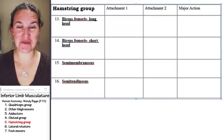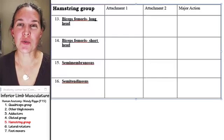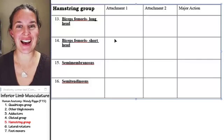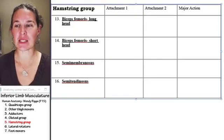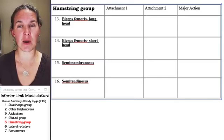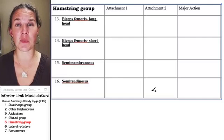All right. Hamstring group. The hamstring group is found in the posterior compartment of your thigh, and there are a couple of things that make this group a group, a couple of ways that we can think about them or sort them to help us organize.